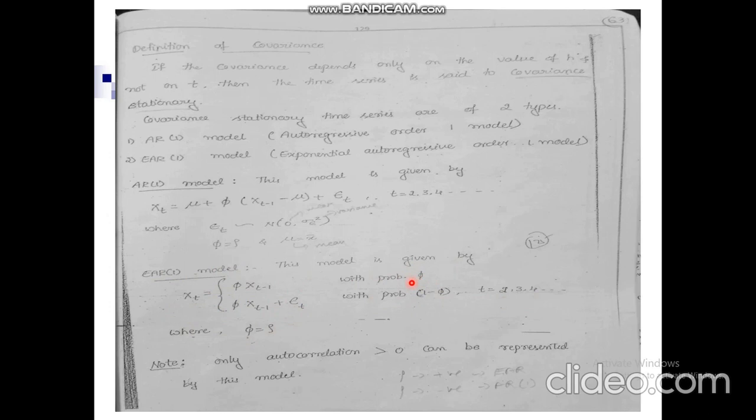Here, phi is equal to rho. An important note: if the calculated rho value is positive, you choose the EAR1 model. If rho is negative, you choose the AR1 model.